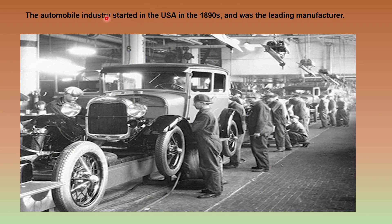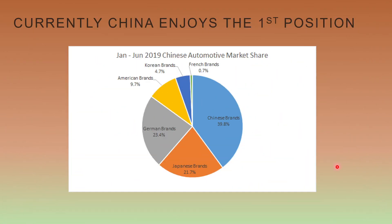The automobile industry began in the USA in the 1890s and was the leading producer and manufacturer for almost one century. However, it was then overtaken by Japan. In the present scenario, China holds the top position in automobile production with nearly 40% share in the automotive market, followed by Germany, Japan, America, Korea, and French brands.